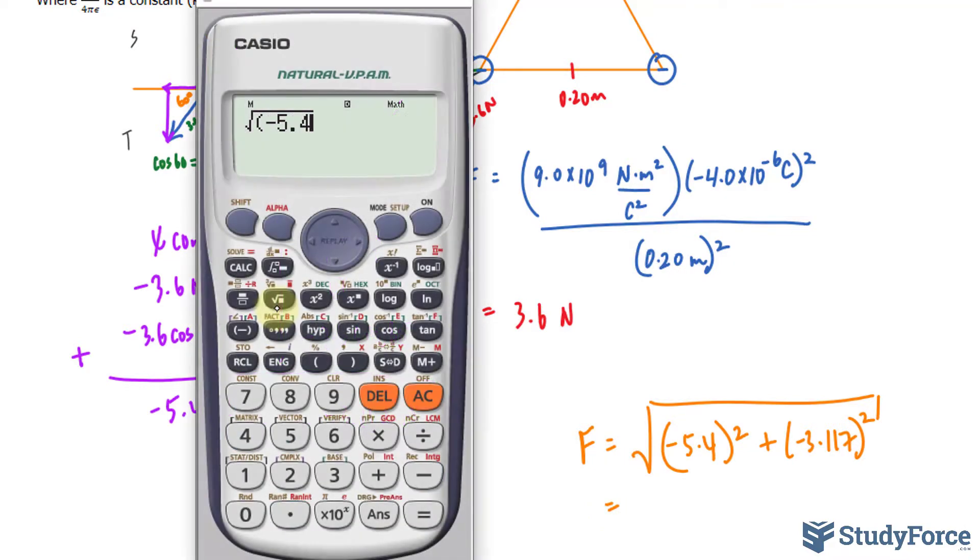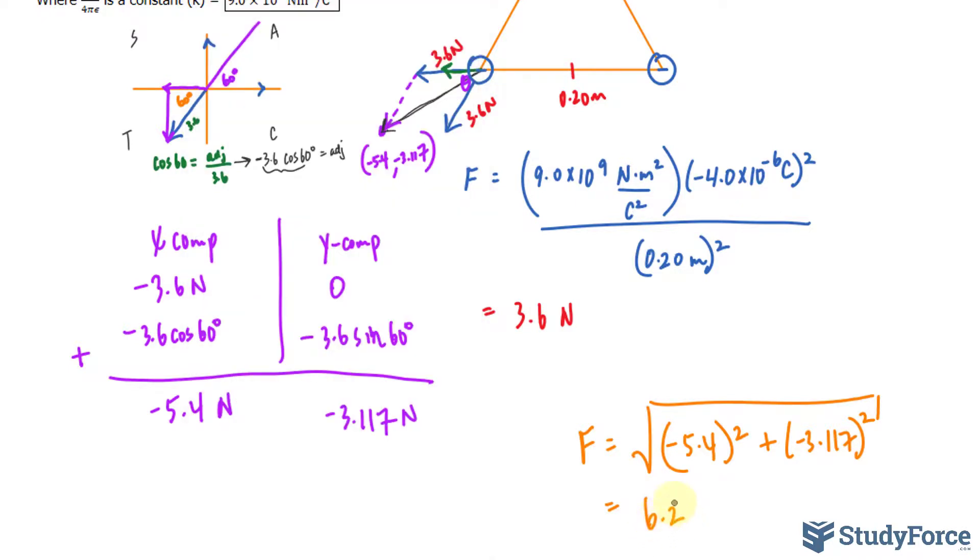Negative 5.4 to the power of 2 plus negative 3.117 to the power of 2. And that is a magnitude of around 6.2. We need this to two significant figures, newtons.